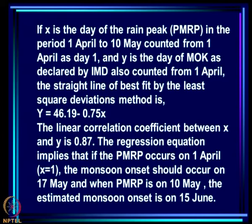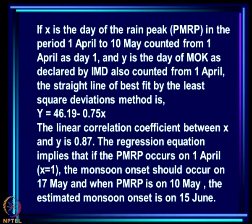They found a straight-line fit to the deviations. The correlation coefficient between X and Y is 0.87, and the fit gives Y = 46.19 − 0.75X. This means the monsoon onset date is linearly related to when the pre-monsoon peak occurred. The regression implies that if PMRP occurs on April 1st, onset should occur on May 17th — over a month and a half later — and when PMRP is on May 10th, the estimated onset is June 15th, just 35 days later.